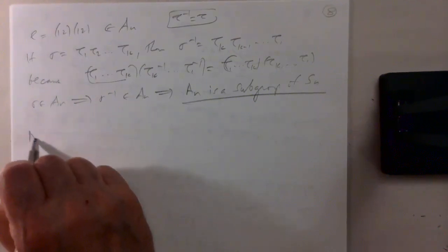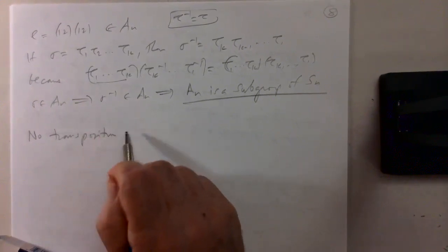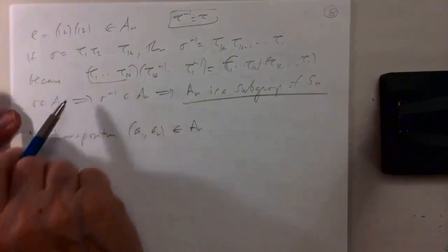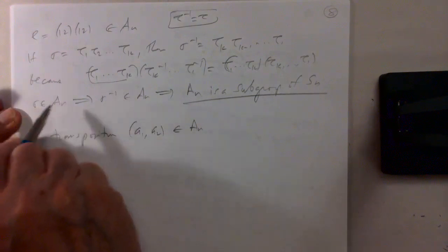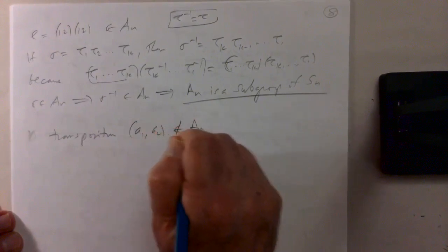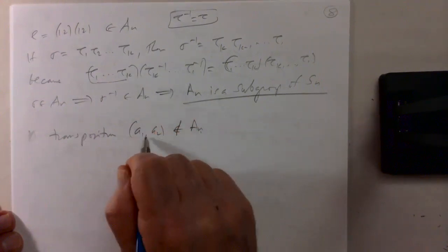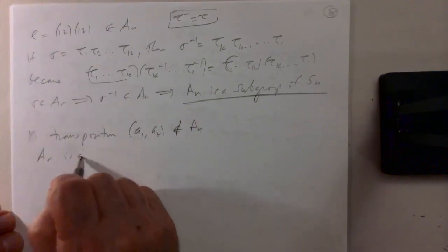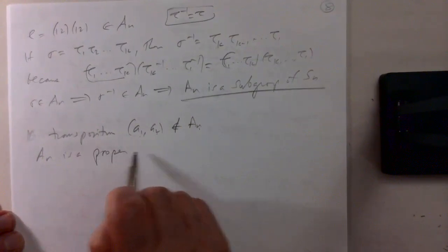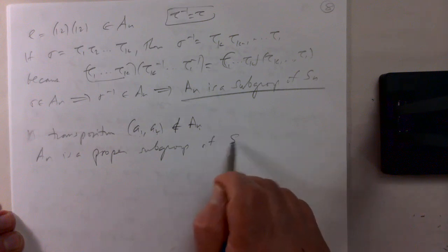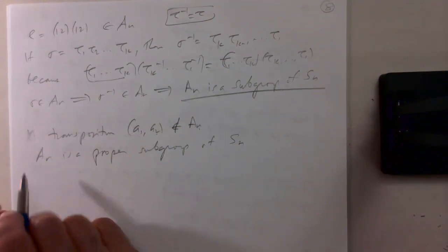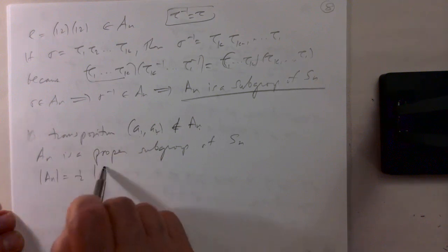No transposition (a1, a2) is in A_n, because a transposition is a product of exactly one transposition, and one is odd. So A_n is a proper subgroup of S_n — it's not equal to the whole group. In fact, A_n has exactly half the elements of S_n. The reason is: if sigma is in A_n and tau is a transposition, then sigma tau is not in A_n (even plus one is odd). This gives a bijection from A_n to S_n minus A_n by multiplying by tau, so each half has the same size.